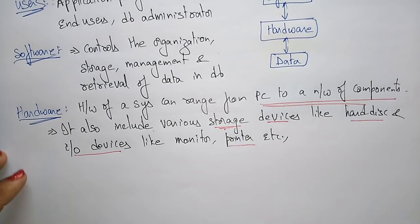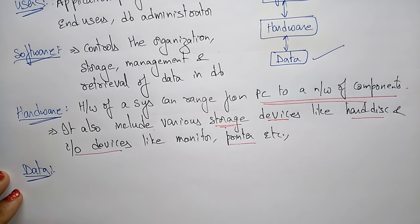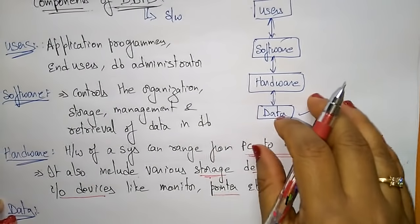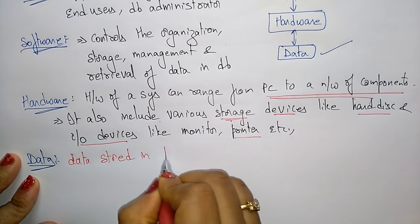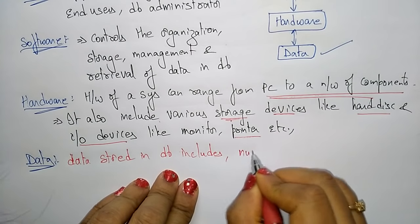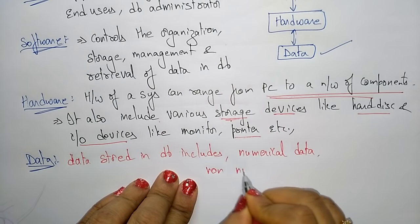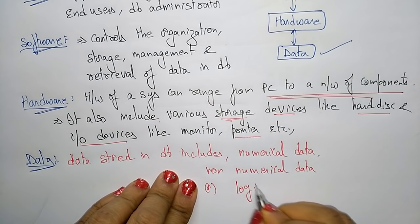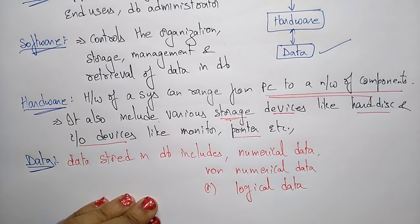Now coming to the main thing — data. What type of data is stored in the database? The data stored in a database includes numerical data, non-numerical data, or logical data. So these different types of data can be stored in the database — it may be numerical, non-numerical, or logical.